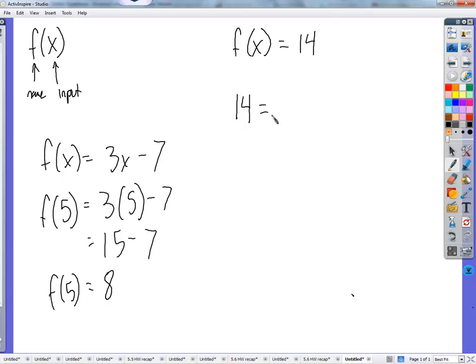What do you do to get 14? You do this. You get 3x minus 7. You do 3x minus 7, 3 times some number x minus 7, and that will give you 14. So we solve for x. What's x going to be? Well, we add 7. We get 21 equals 3x, divide by 3 on both sides, and x is 7.